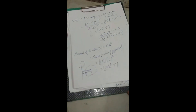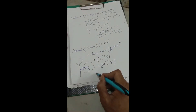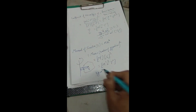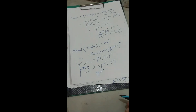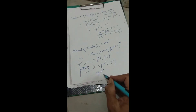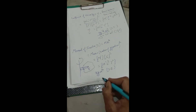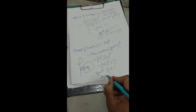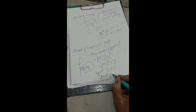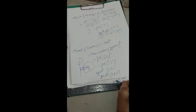The SI unit for moment of inertia: since the dimension is M1 L2 T0, mass is in kilograms and length squared is in meter squared — so the SI unit is kilogram·meter² (kg·m²). For the CGS system, mass is in grams and length is in centimeters — so the CGS unit is gram·centimeter² (g·cm²).